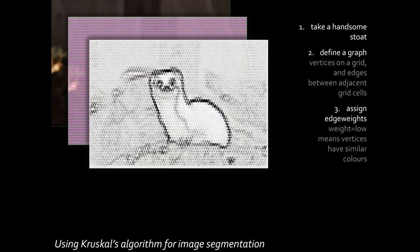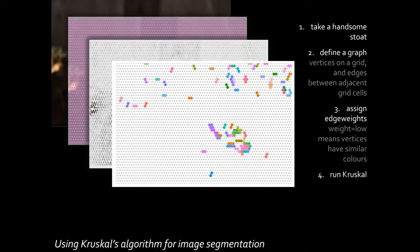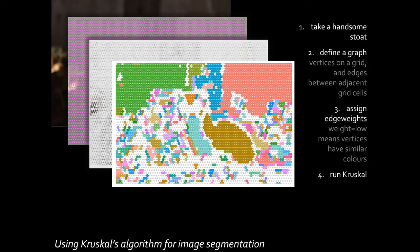And finally, we can take this graph and we can run the minimum spanning tree algorithm on it. The minimum spanning tree builds up clusters of vertices. And this is what it looks like: slowly, steadily building up more clusters.